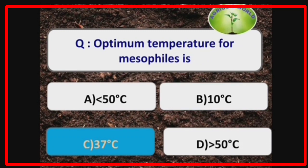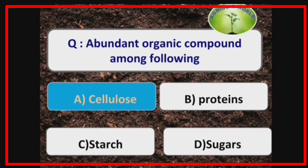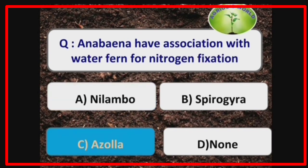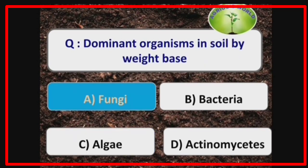Optimum temperature for mesophiles is 37 degrees Celsius. The most abundant organic compound is cellulose. Anabaena has an association with water fern (Azolla) for nitrogen fixation. The dominant organism in soil by weight basis is fungi.